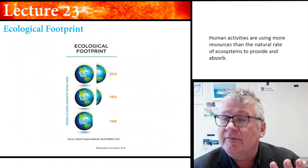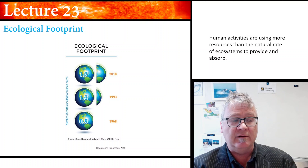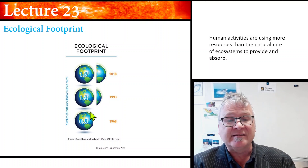You can find estimates of the time series of the ecological footprint, showing that in 1968 you still had enough resources, and then from 1993 the footprint actually exceeded the biocapacity, and it increases and increases. What it means is that the population is too high, but also the practices — the way we actually produce stuff — are not sustainable. Human activities are using more resources than the natural rate of ecosystems to provide and absorb.